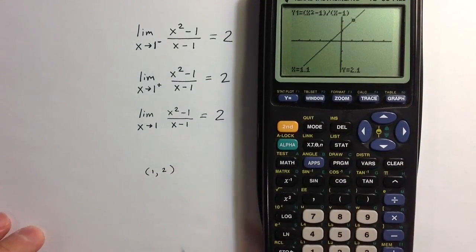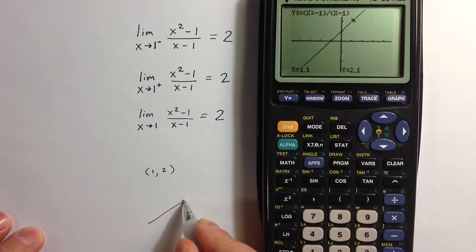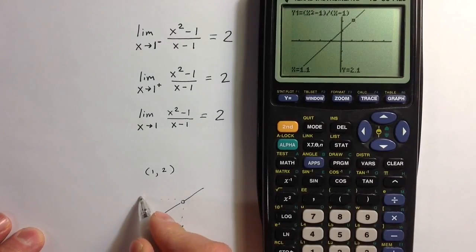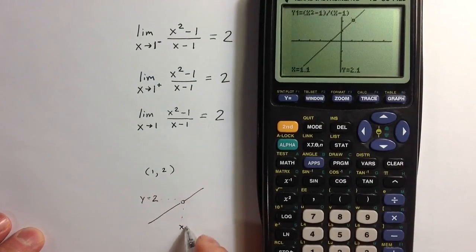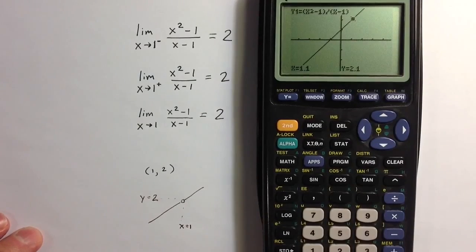And so the limit, as we get closer and closer to that hole, the limit is getting closer and closer to 2. So the y value is getting closer and closer to 2 as the x value gets closer and closer to 1. I hope you enjoyed the video. Thanks.